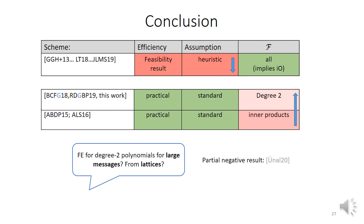For example, it would be interesting to build FE for degree two polynomials for large messages. So I didn't mention that, but the schemes, the prior schemes and our scheme all share this feature that the message is recovered in the exponent of a group element. So you need to brute force the discrete logarithm and that restricts the scheme to small messages. It would be interesting in its own right, and it's also likely to have implications for larger classes of functions. For example, lattice-based scheme would be a good candidate, although there is some partial negative results on that. Li, Micciancio, and Wichs show that function hiding inner product FE from lattices can be subject to generic attacks, like a large class of schemes. But still, there's a lot of things to explore in this area.